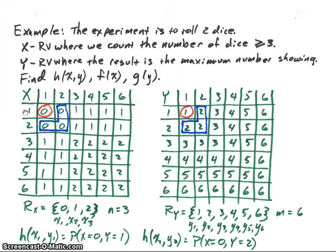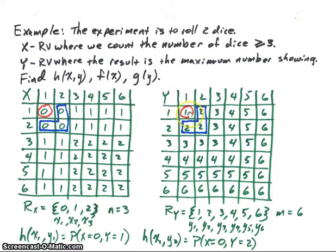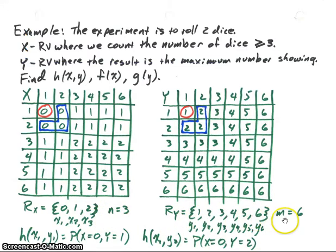When we roll a one and a one for X, since we're looking at the number of dice greater than or equal to three, that'll be zero — there's none greater than or equal to three. If we roll a one and a two, again zero. But if we roll a one and a three, there's one die that is greater than or equal to three, so we put a one in there. If we roll a three and a three, there are two that are greater than or equal to three, so we put a two. For Y, we're looking at the maximum of the two dice: roll a one and a one, maximum is one; roll a one and a two, maximum is two. The range values for X are zero, one, and two — three different values. For Y, we have one, two, three, four, five, six — six different values.